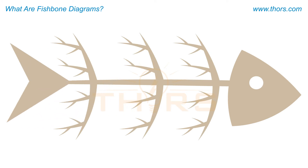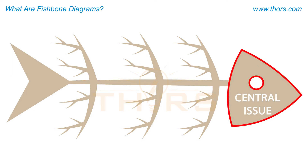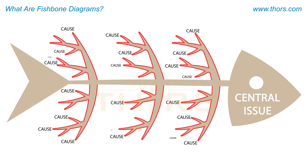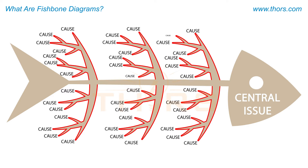When using these diagrams, a central issue or focal point, such as a defect or quality problem, is placed at the head of the fish. The bones of the fish serve as a way to visually organize all possible variables or causes that may have caused the central issue.